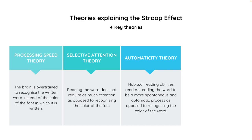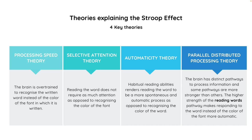The parallel distributed processing theory suggests that as the brain analyzes information, different and specific pathways are developed for different tasks. Some pathways, such as the reading pathway, are stronger than others, such as the color naming pathway. Therefore, it is the strength of the pathway — not the speed — that is important. Automaticity is a function of the strength of each pathway. When two pathways are activated simultaneously, as in the context of the Stroop effect, interference occurs between the stronger and the weaker pathway, specifically when the pathway leading to the response is the weaker one.